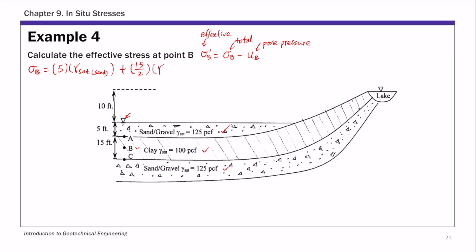If you plug in numbers, this is 5 times 125 plus 7.5 times 100. This gives us the total stress at point B, which is 1375 PSF, pound per square foot. That's relatively easy to calculate.